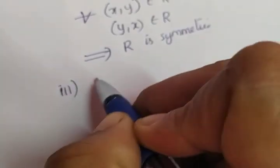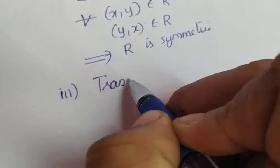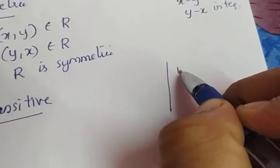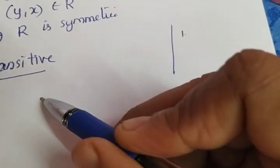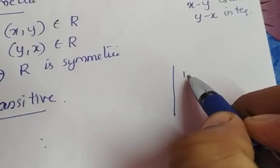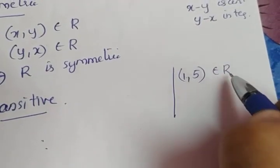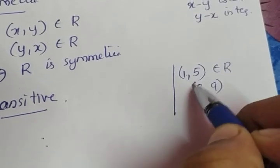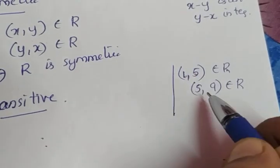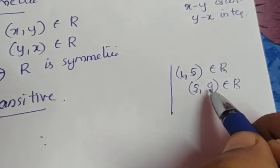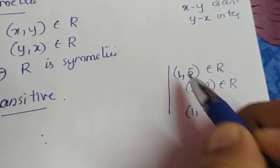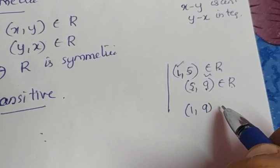Third, prove transitive. We deal with an example. We are not writing generally first because for transitivity we need the general case, but for checking we take an example. Suppose (1,5) element of R and (5,9) element of R. (1,5) is an element because the difference of 1 and 5 is an integer. (5,9) is also an element because the difference of 5 and 9 is an integer. We have to check whether (1,9) element of R or not.